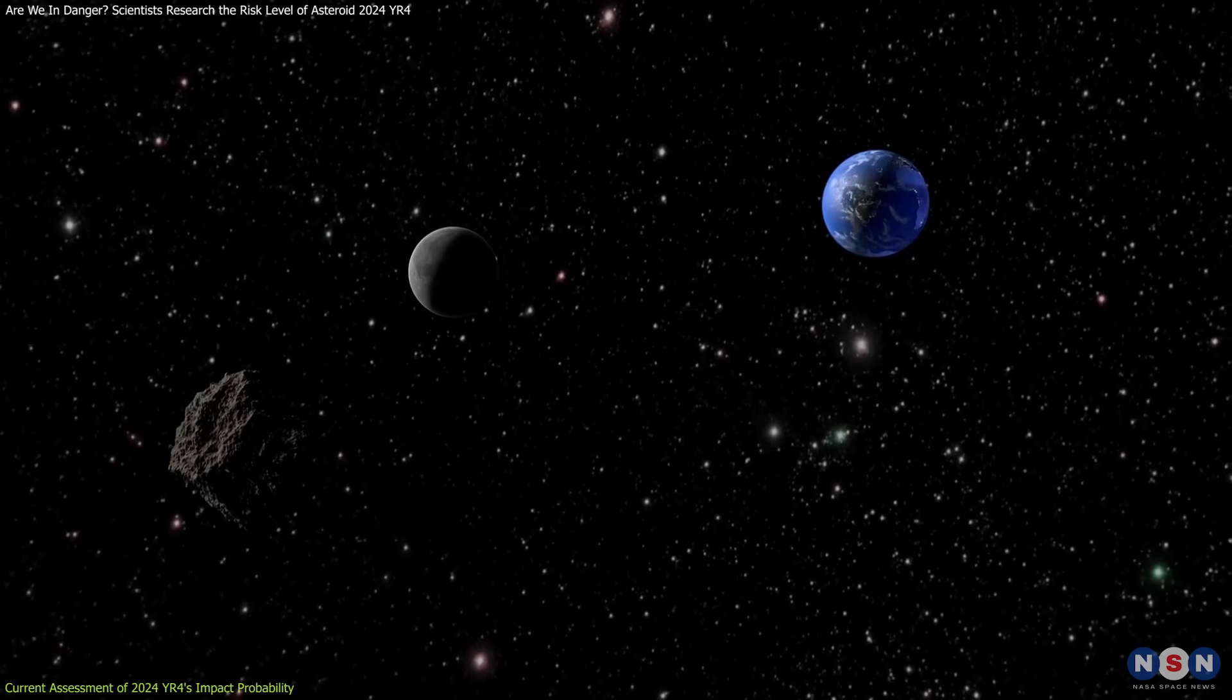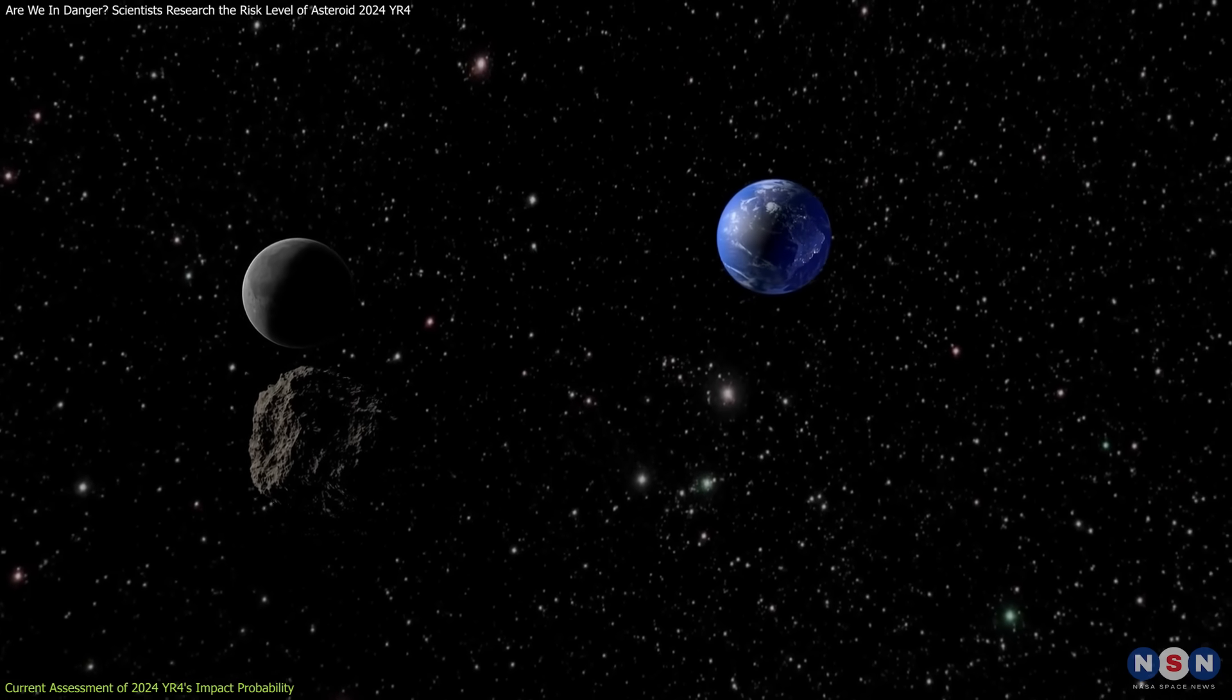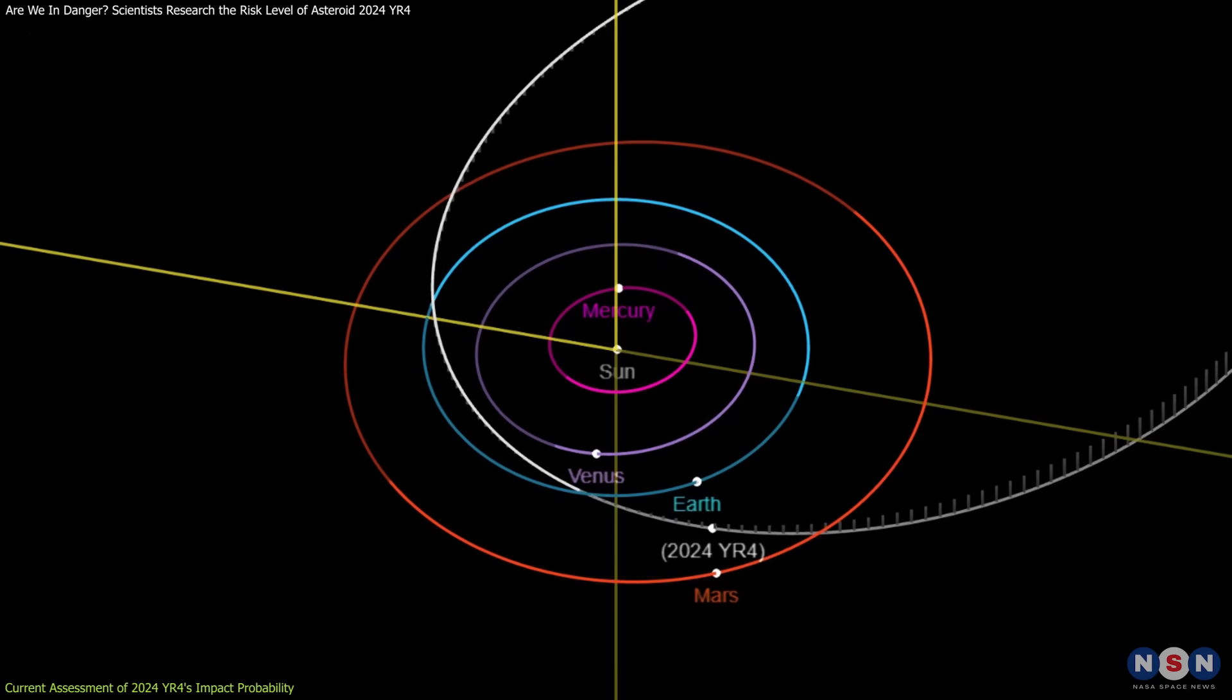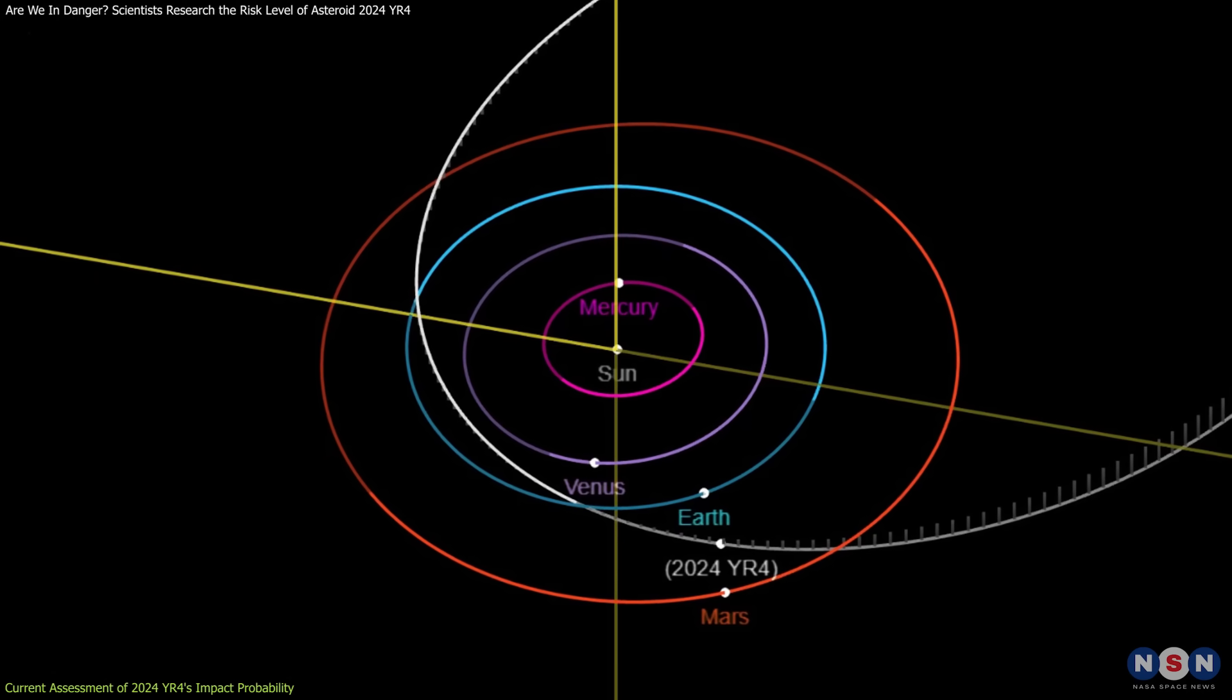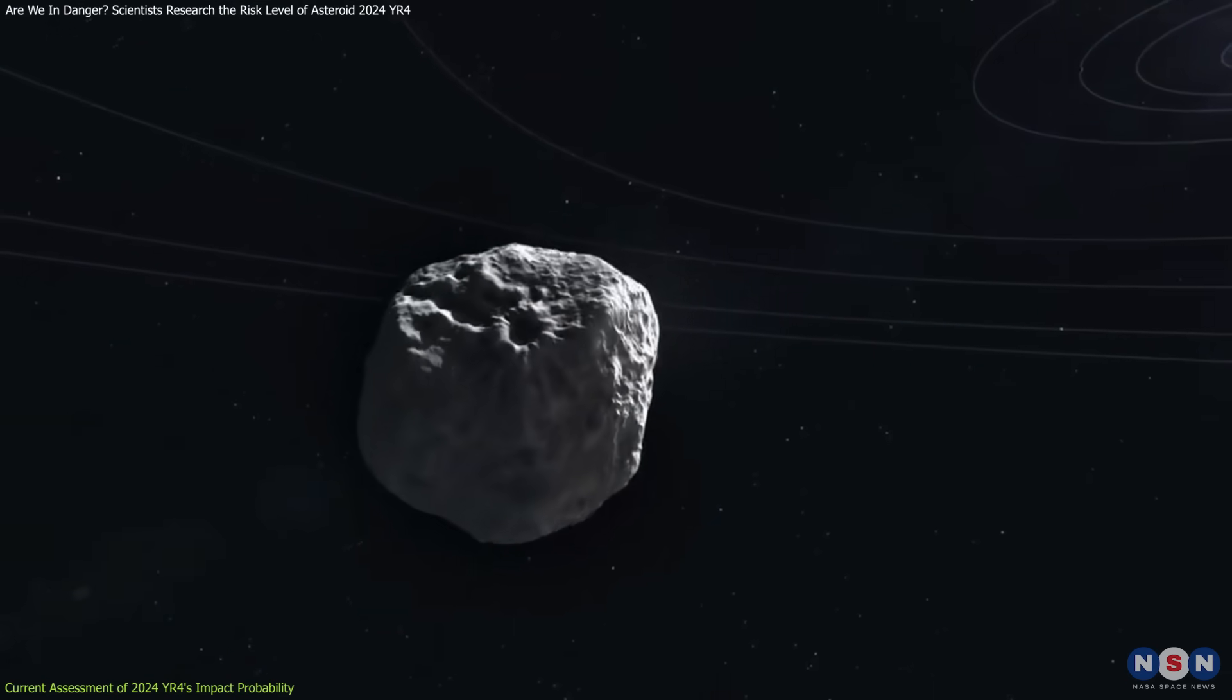Such evidence highlights why even a small probability must be taken seriously. This asteroid follows a highly elliptical orbit that brings it close to Earth periodically before swinging back towards the outer solar system.